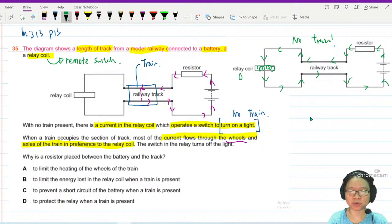This relay coil is on when there's no train. But when there is a train, then there's no current flowing through the relay coil. Relay coil is off.